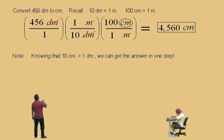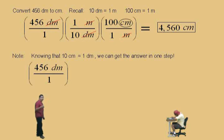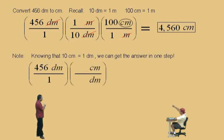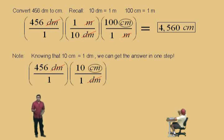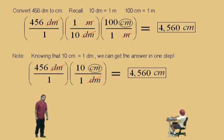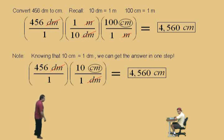Here we go, we're going to do it in one step. 456 decimeters over 1 — we'll write that ratio — and if we know how many centimeters are in one decimeter, we can use this conversion factor. We put decimeters on the bottom: ten centimeters over one decimeter, because ten centimeters is one decimeter. Decimeters cancel out, and you're left with centimeters. You put the number in your calculator and you get 4,560 centimeters — there you go in one step. Either way is fine; it all depends on what conversions or equations you know.